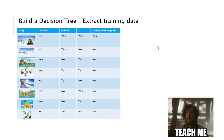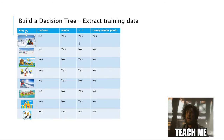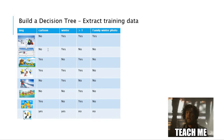Here's the extracted data. We had eight pictures, and I extracted this data with three attributes: cartoon, winter, and more than one person. For example, this picture is not a cartoon, it's in winter, and has more than one person — so the answer for family winter photo is yes. This one is not a cartoon, it's winter, but has just one person, so the family winter photo answer is no.